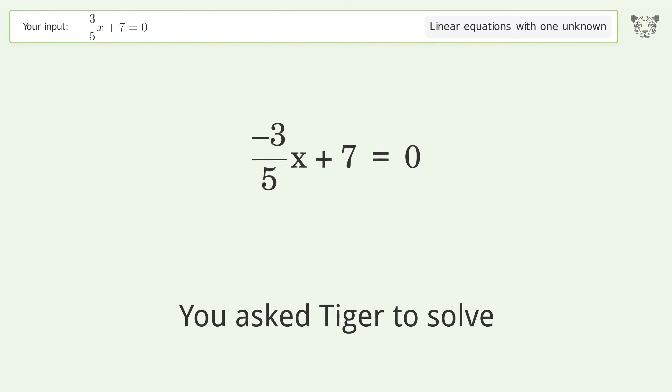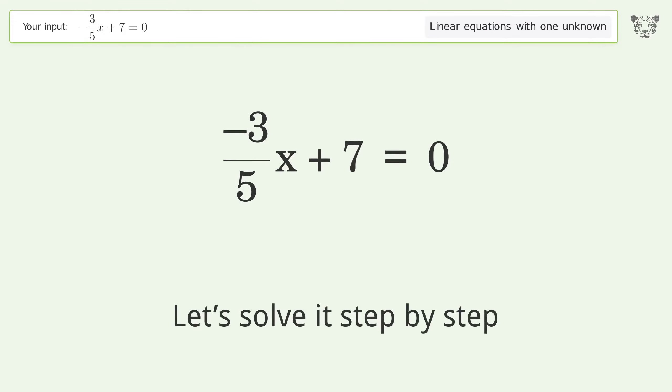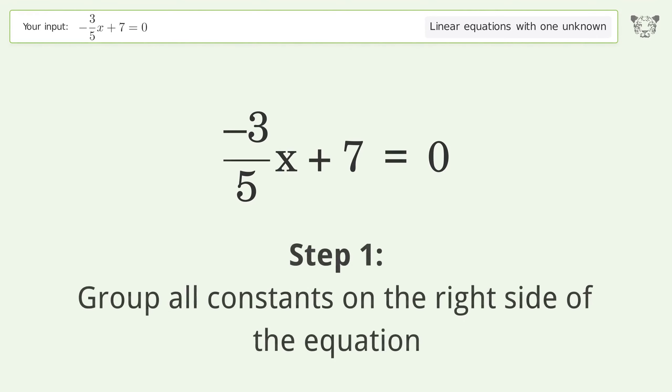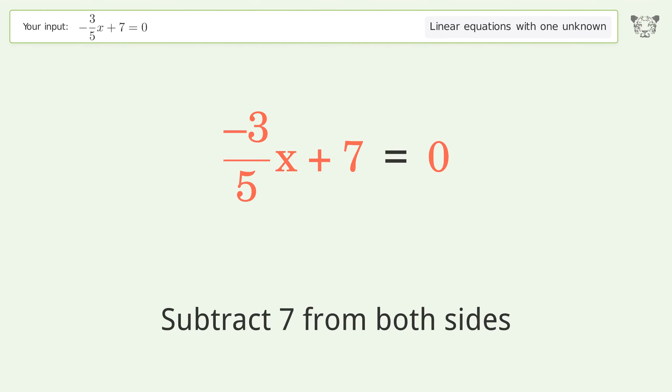You asked Tiger to solve this. This deals with linear equations with one unknown. The final result is x equals 35 over 3. Let's solve it step by step. Group all constants on the right side of the equation. Subtract 7 from both sides.